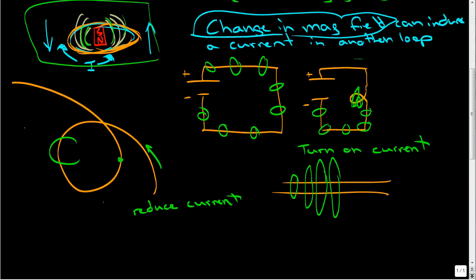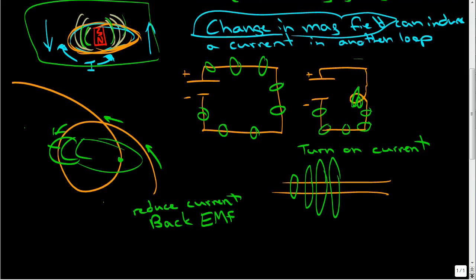So we have current flowing this way. When we reduce the amount of current, it's going to induce a voltage. This is called a back EMF — the counter-electromotive force — because when this magnetic field line gets smaller and changes, it will oppose it. So it's going to induce this current backwards. That's why inductors resist change in current.